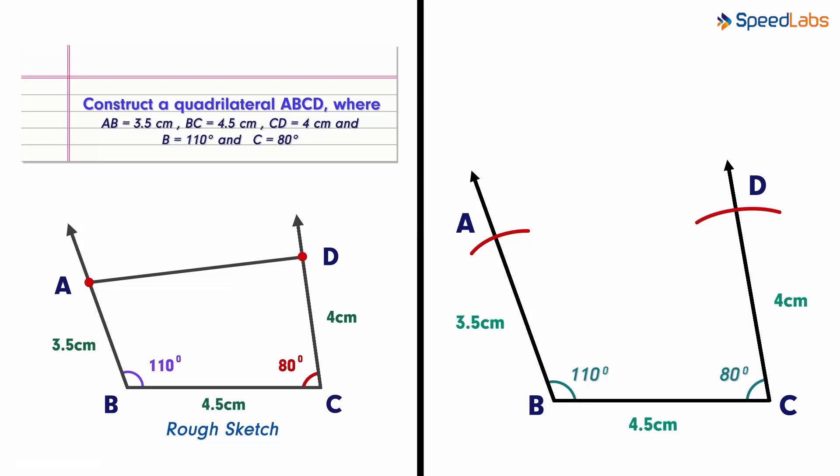Observe the constructed figure and you'll find that we have sides AB, BC and CD. We are just left with side AD. Do we need the data for side AD? Not really. We already have points A and D on the plane.